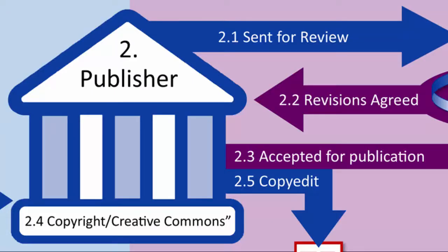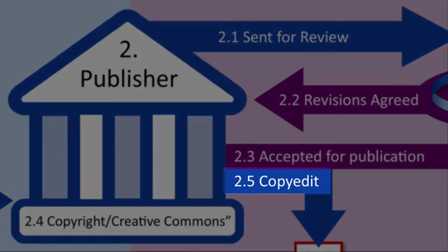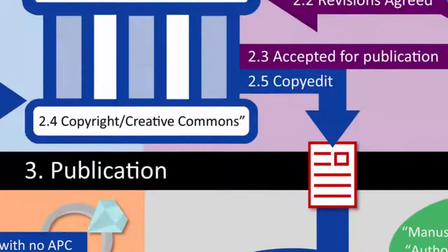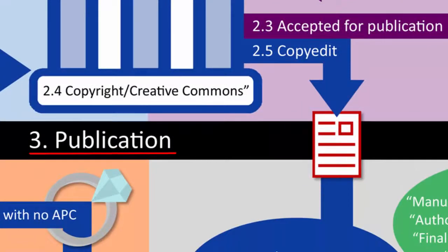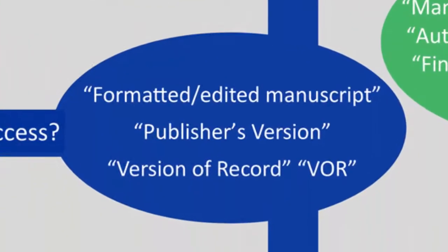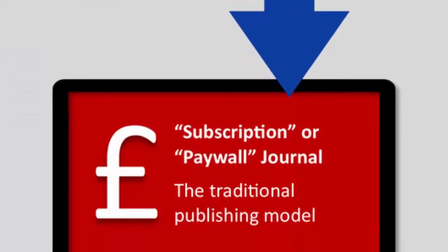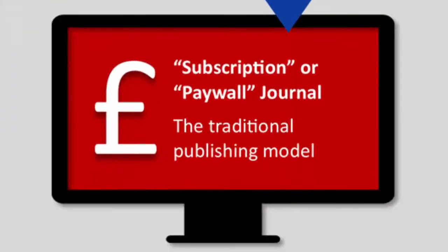The publisher will then copy edit your paper. This means final quality control checks for problems such as typos and reference inaccuracies are carried out before the journal formatting is added to the paper. It is then ready for publication. This version is known as the formatted or edited manuscript, publisher's version, version of record, or VOR.